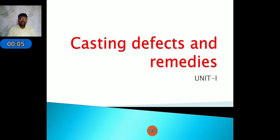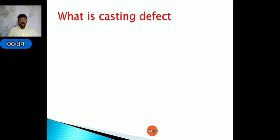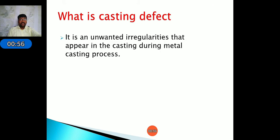Good morning. In the previous lecture we discussed different types of special casting processes, their applications, advantages and disadvantages. In this lecture we will discuss casting defects and remedies — what is a casting defect and why it occurs. There are many different reasons for casting defects: preparation of molding sand, core preparation, melting process, pouring of molten metal, and solidification.